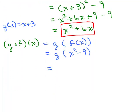So I'm writing x² - 9 and then I've got plus 3. So this gives you x² - 6.